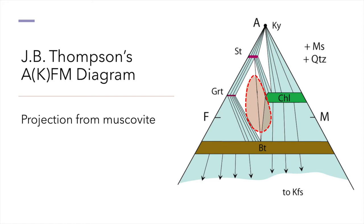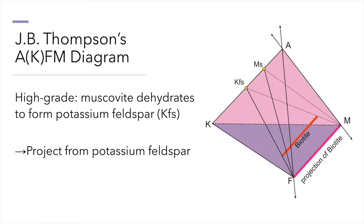Let's practice reading the stable mineral assemblages from the AFM diagram. Under these pressure-temperature conditions, the stable mineral assemblage for the location at the star will be composed of biotite, staurolite, and garnet, each with a solid solution composition at their vertex of the triangle, as well as muscovite and quartz. Remember that in order for the projection to be strictly valid, the phases we are projecting from must be present in the stable mineral assemblage. In high-grade rocks, where potassium feldspar is the common high-potassium phase instead of muscovite, the AFM diagram should be projected from potassium feldspar.